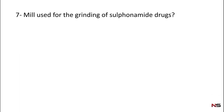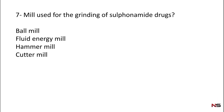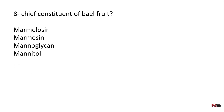Question number seven: Which mill is used for the grinding of sulfonamide drugs? Options: ball mill, fluid energy mill, hammer mill, cutter mill. The correct answer is fluid energy mill, which is used for the grinding of sulfonamide drugs.